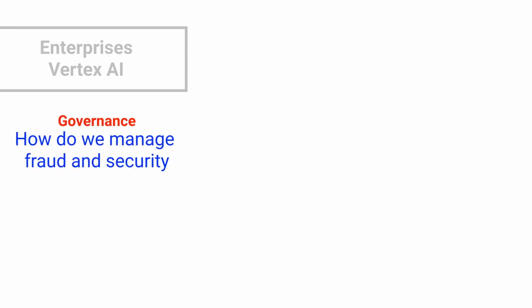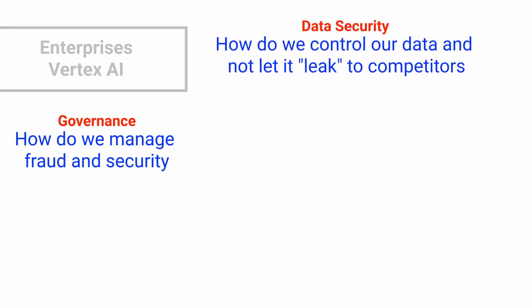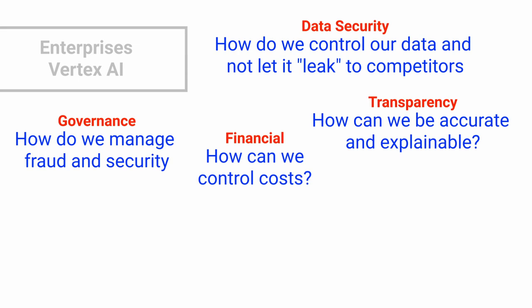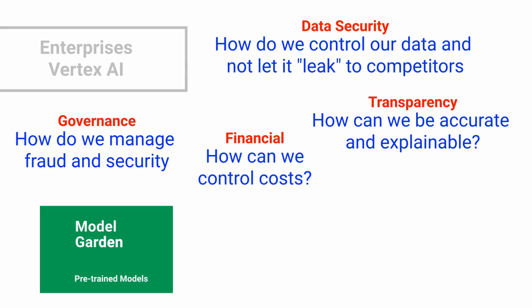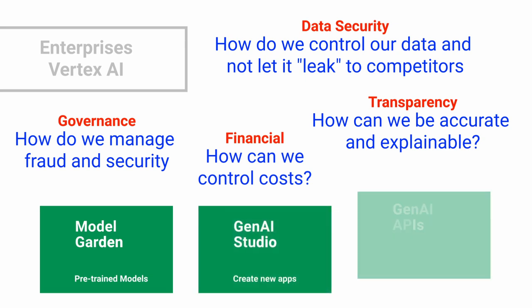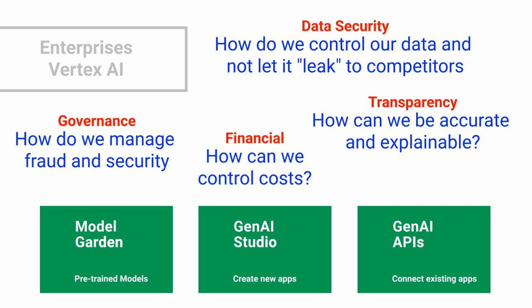Google's enterprise AI product is called Vertex AI, and you might ask it more business-focused questions like: how do we manage fraud and security? How do we control our data and not let it leak to competitors? How can we control costs? How can we be accurate and explainable? When using Vertex AI, you have the option of using the Model Garden, which is a list of pre-trained models, the Gen AI Studio for creating new apps, or the Gen AI APIs for connecting to existing apps.